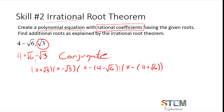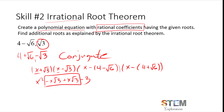When you multiply the conjugates together: x times x gives x squared, x times negative square root of 3 gives negative x square root of 3, square root of 3 times x gives positive x square root of 3, and square root of 3 times square root of 3 gives negative 3. The irrational parts always cancel out when you multiply conjugates together. The same thing will occur with the other pair — I'll distribute the minus sign first: x minus 4 plus square root of 6 and x minus 4 minus square root of 6, to keep track of signs before FOILing.